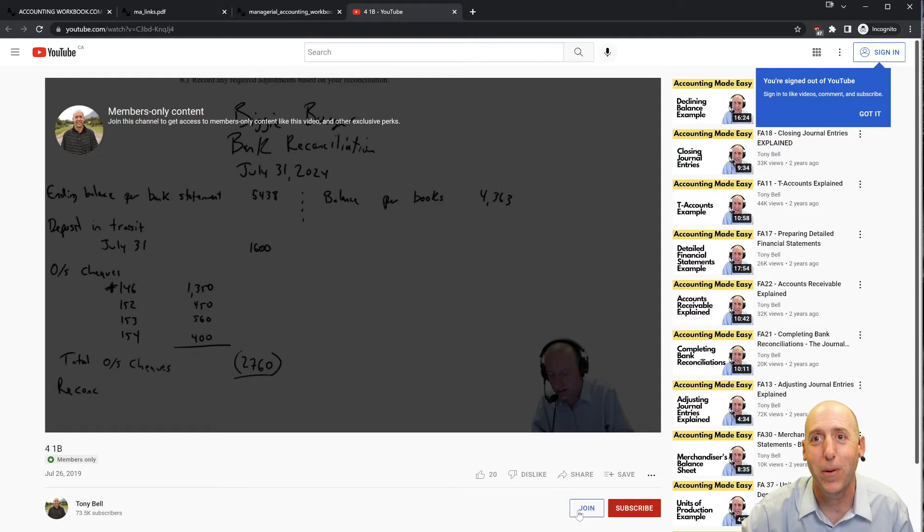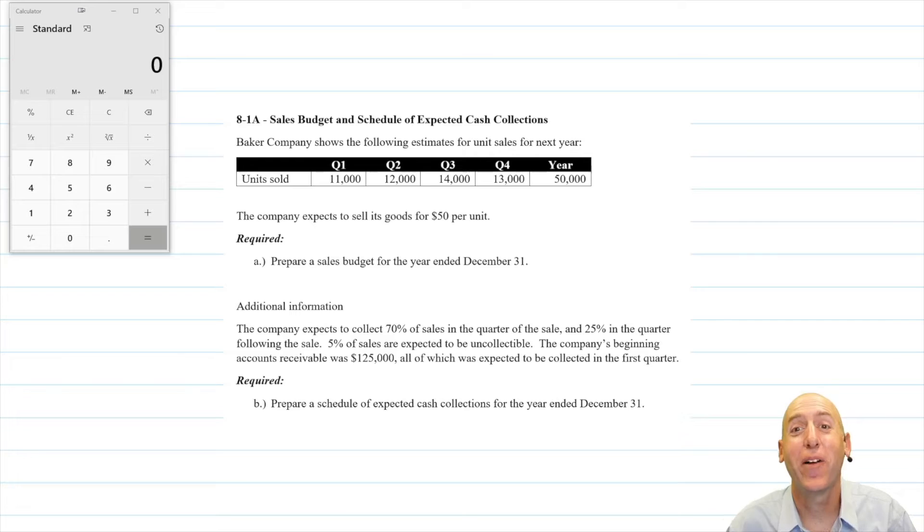Let's jump into the problem. Let's take a look at problem 8.1a. This problem has us doing a sales budget as well as a schedule of expected cash collection. You'll see the sales budget pretty simple thing for the accountant to do, much harder thing for the marketing manager or the forecaster to figure out what the sales are going to be. Once we have a sales budget, the accounting side is quite easy. The expected cash collection though, that takes more work from us, the accountant, but let's get to it.